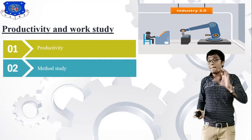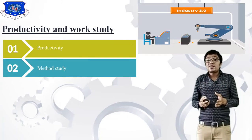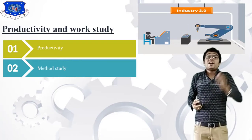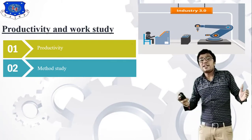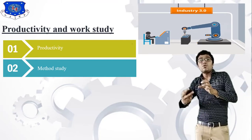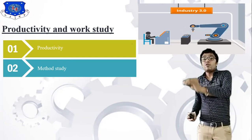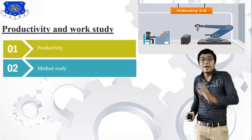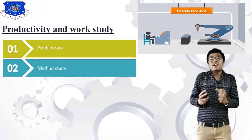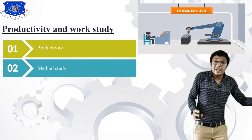Number two is method study — what is method study? Method study improves your method. For example, there is a lathe machine and a CNC machine. The lathe machine is the basic machine, while the CNC machine — computerized numerical control — uses G-code and M-code. This is an improved method. You always have to change your method according to your operation and technology.